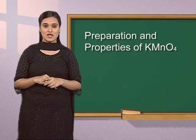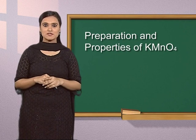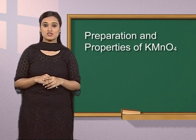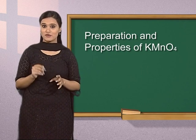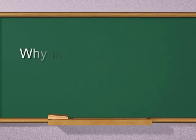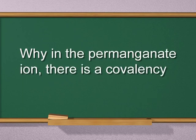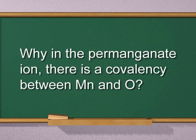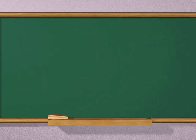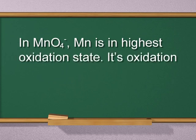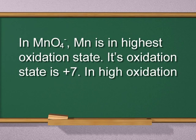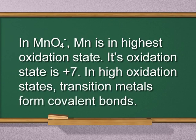After studying preparation and properties of potassium permanganate, let us recall today's topic with some questions. Question 1: Why is there covalency between manganese and oxygen in the permanganate ion? Answer: In the permanganate ion, manganese is in its highest oxidation state of plus 7. In high oxidation states, transition metals form covalent bonds.